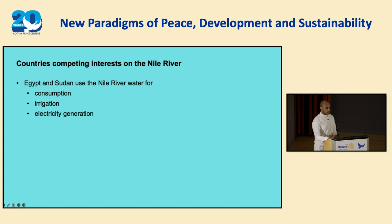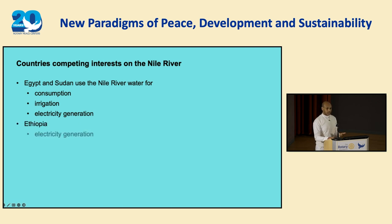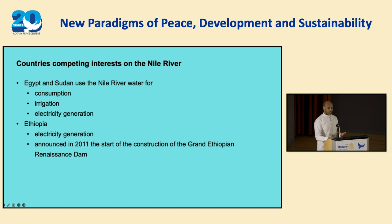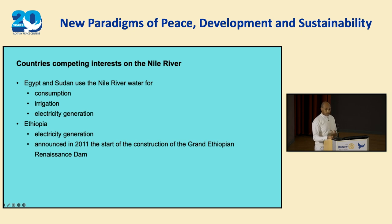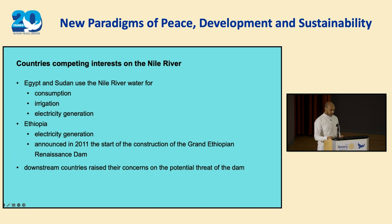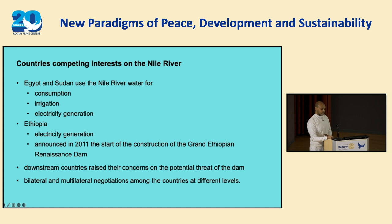This river became a source of conflict because the countries have competing interests on the Nile River. Egypt and Sudan, the two downstream countries, use the Nile River water for consumption, irrigation, and electricity generation. Whereas Ethiopia wants to use the Blue Nile to generate electricity, and announced the construction of the dam in 2011. Following this announcement, the downstream countries raised their concerns about threats to their water security. These three countries entered into bilateral and multilateral negotiations at different levels; however, these negotiations have continued for a decade and are still ongoing without reaching any mutual agreement.